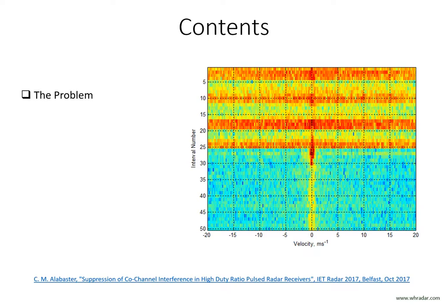Appreciating the problem is a large part of the battle, and it shows that if mutual interference is to be controlled one must address both the transmitted waveform and the receiver design. First, we shall address what can be done with the transmitter half of the problem. For pulsed radars, the spectral spread into neighbouring channel frequencies can be controlled by appropriate shaping of the pulse. This is a well established technique used by many systems.